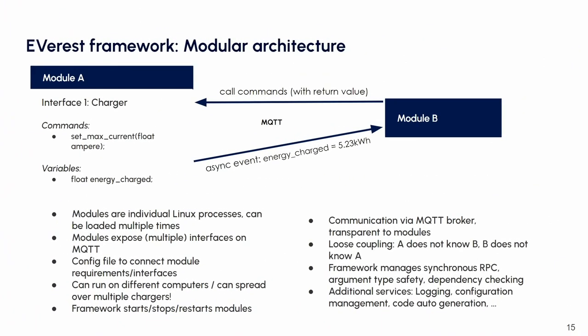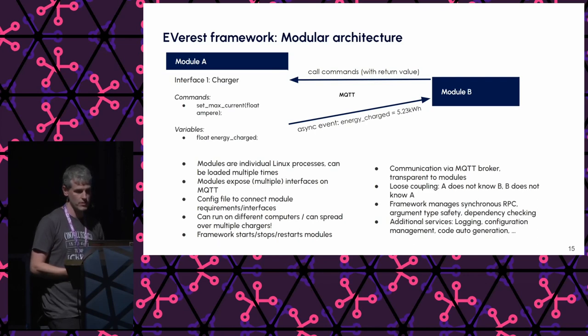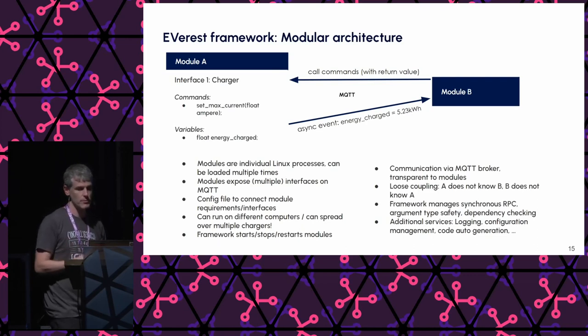So how is Everest built up on the inside? It's a very modular architecture — kind of a microservice architecture where each module runs as a separate Linux process. These modules can expose interfaces on an MQTT bus, and modules can also require interfaces from another module. There's a config file to connect those. These modules can also run on different computers — since it's MQTT, they can communicate over the network with each other. There's a whole framework around it, the Everest framework, that does all the MQTT abstraction and takes care of starting and stopping modules.